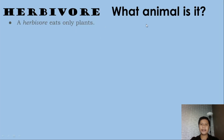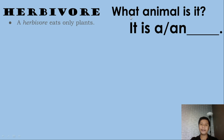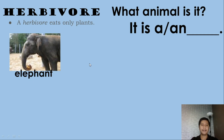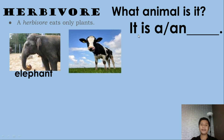Now let's read the sentence structure: 'What animal is it? It is a/an [blank].' So, what animal is it? It is an elephant. An elephant is an example of an herbivore because an elephant eats only plants.